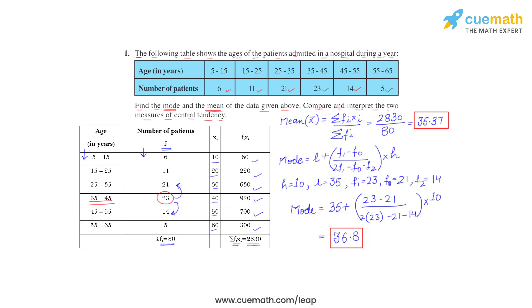And the mean age is 35.37, so average age of the patients admitted is 35.37 years.